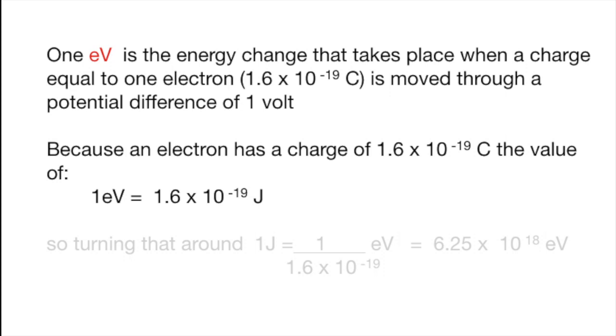Now, because an electron has a charge of 1.6 times 10 to the minus 19 Coulombs, originally measured by Millikan, it follows that an electron volt is just 1.6 times 10 to the minus 19 joules.